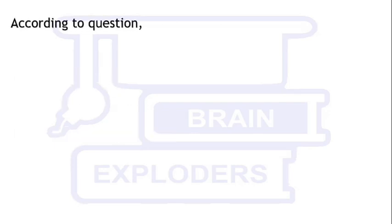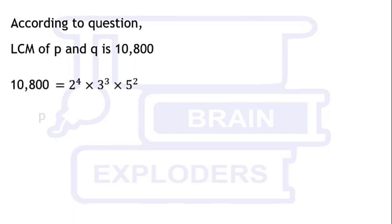Keep this method in your mind and move to the problem. In our question it is given that 10,800 is the LCM of p and q. Prime factors of 10,800 are 2, 3, and 5. It means p and q must not have any other factor except 2, 3, and 5.